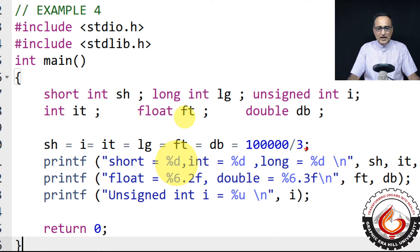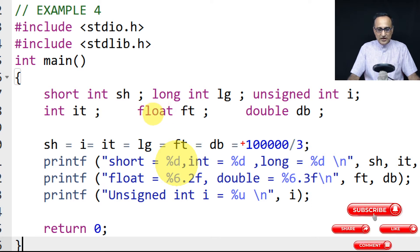Now you need to understand this 100000/3 is an integer type of division. So the result is not going to be 33,333.3333. It's simply going to be 33,333, because this is an integer type of division.